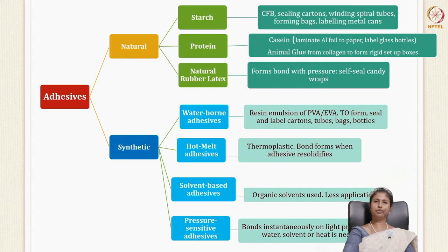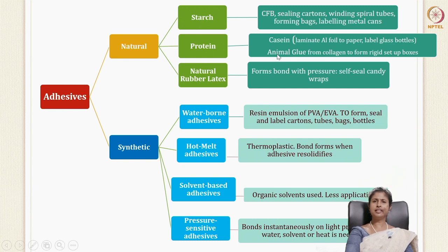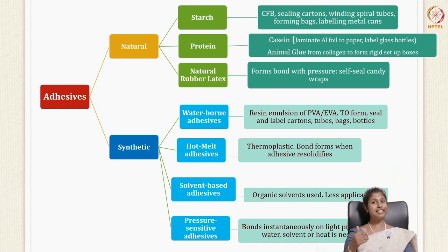There are different types of adhesives in terms of whether they are natural or synthetic. Natural adhesives include starch, proteins, and natural rubber latex. Starch is used for corrugated fiber board (CFB), sealing cartons, winding spiral tubes, forming bags, and labeling metal cans. Proteins — such as casein or animal glue made from collagen/gelatin — are used to make rigid set boxes. Natural rubber latex forms bonds with pressure and is used in self-sealed candy wraps.